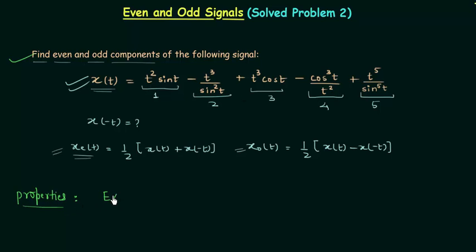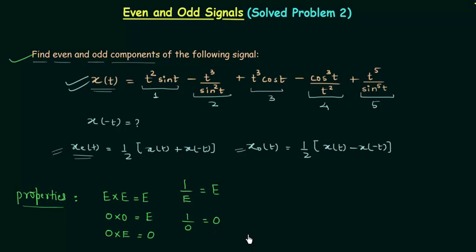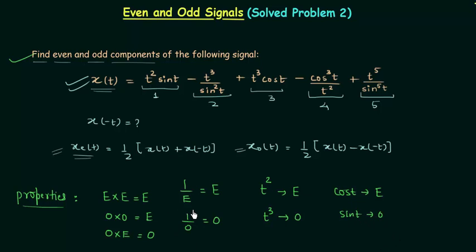Key properties: even × even = even; odd × odd = even; odd × even = odd. Also, 1/even = even and 1/odd = odd. For algebraic functions, t raised to an even power is an even signal (e.g., t²), and t raised to an odd power is an odd signal (e.g., t³). cos(t) is even and sin(t) is odd.